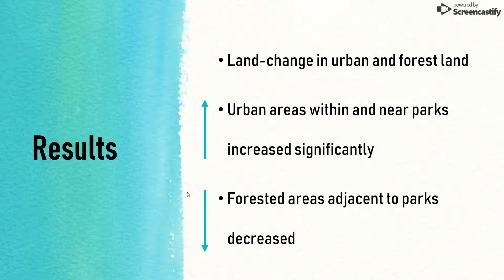The study found that the majority of land change occurred in urban and forest land cover types. The results also show that urban areas within and adjacent to national parks increased significantly from 1970 to 2002, and at the same time there was a decrease in forested areas within and adjacent to that park boundary.